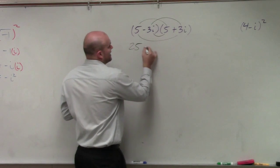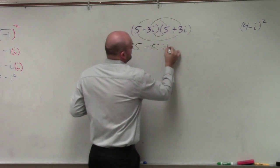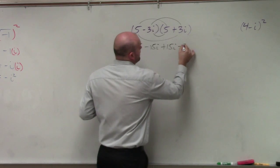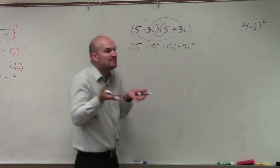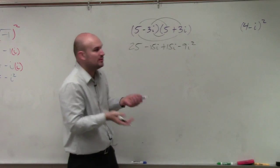That becomes 25. That's negative 15i plus 15i and then minus 9i squared. It happens every single time. It produces a difference of two squares.